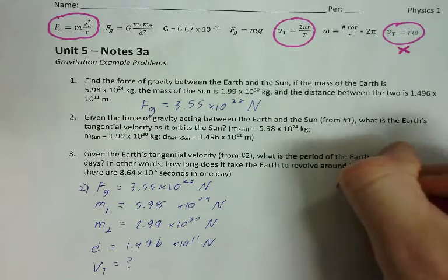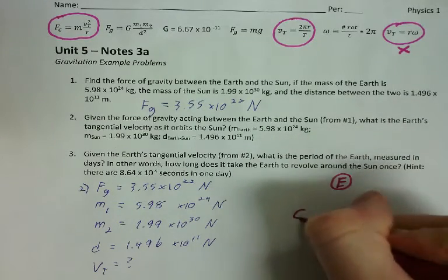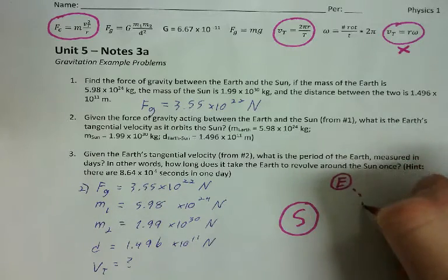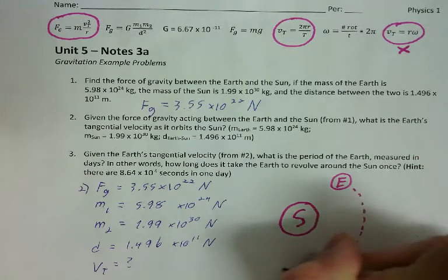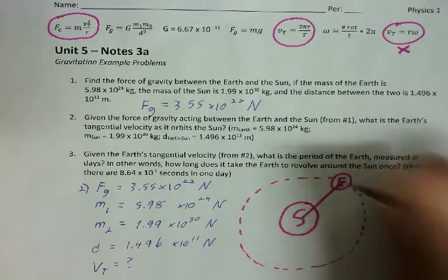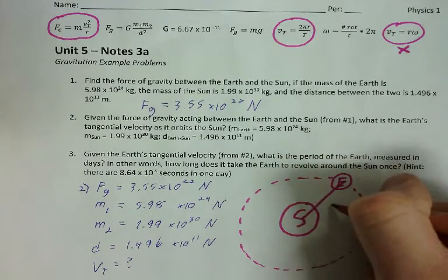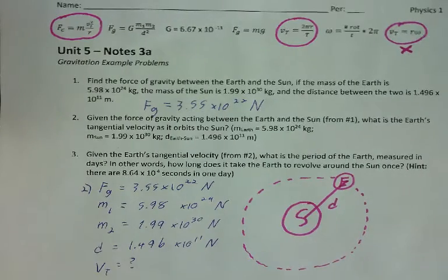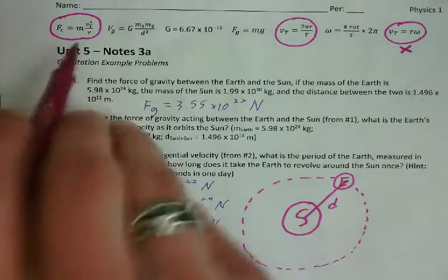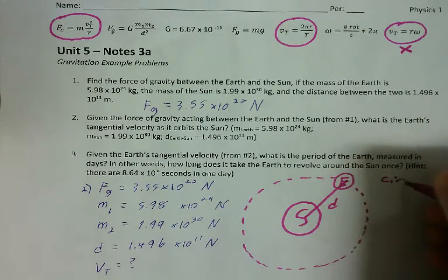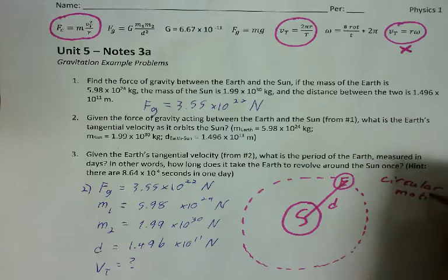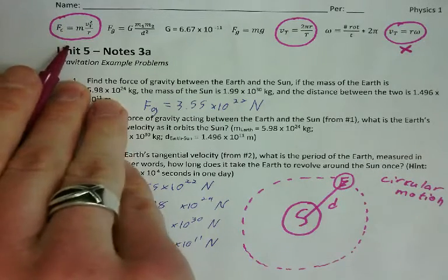So let's look at what's going on. Here is the earth. Here is the sun. The earth orbits around the sun like this. And they're separated by some distance between them of D.